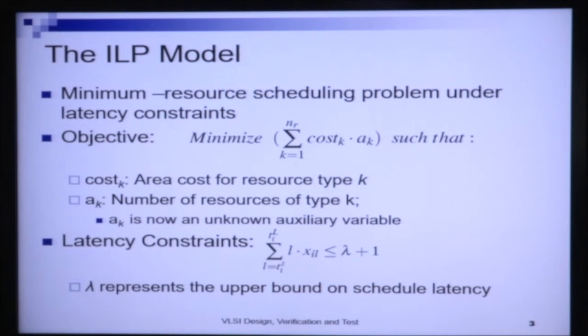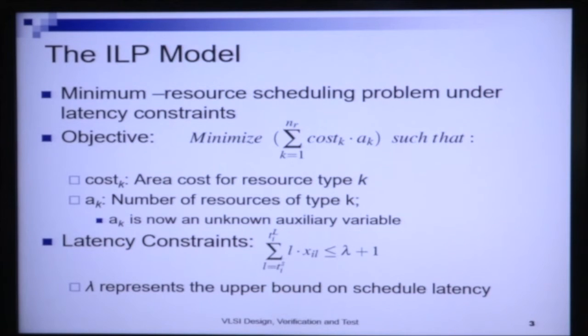An important thing to note is that unlike the resource-constraint scheduling problem, a_k is not known. The number of resources of type k is now an unknown auxiliary variable that has to be determined by appropriately scheduling the operations. We also need a specific latency constraint; let us say that constraint is lambda. In the previous problem we also had lambda but wanted to minimize time given fixed resources. Here we have time constraint lambda but want to minimize resources within that lambda.